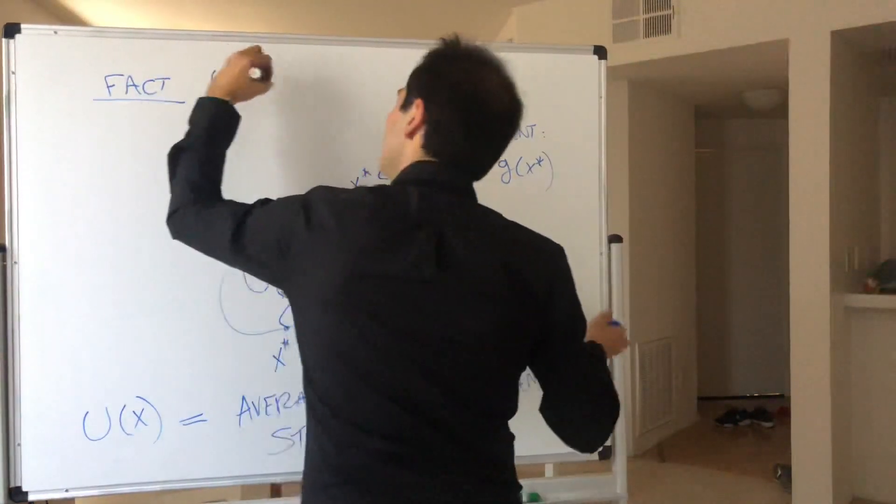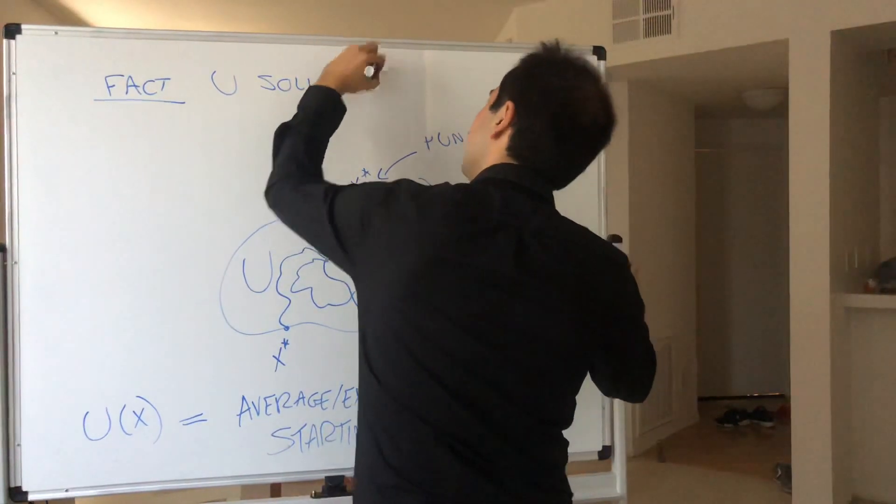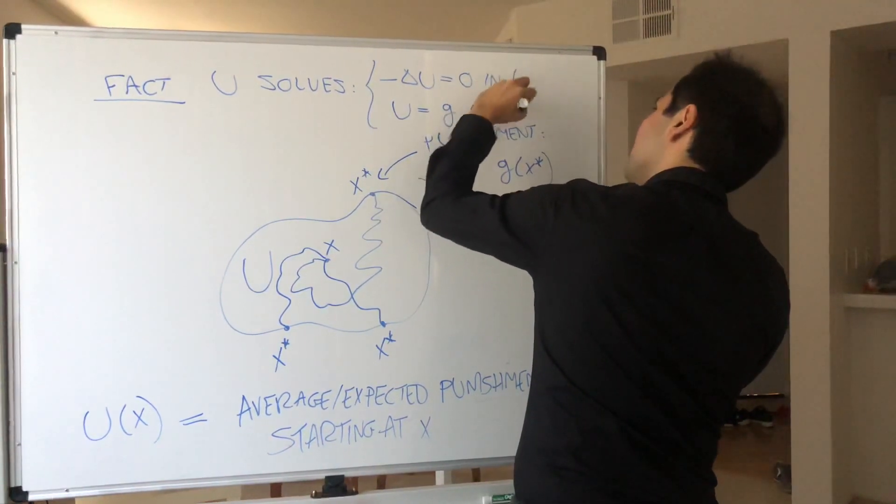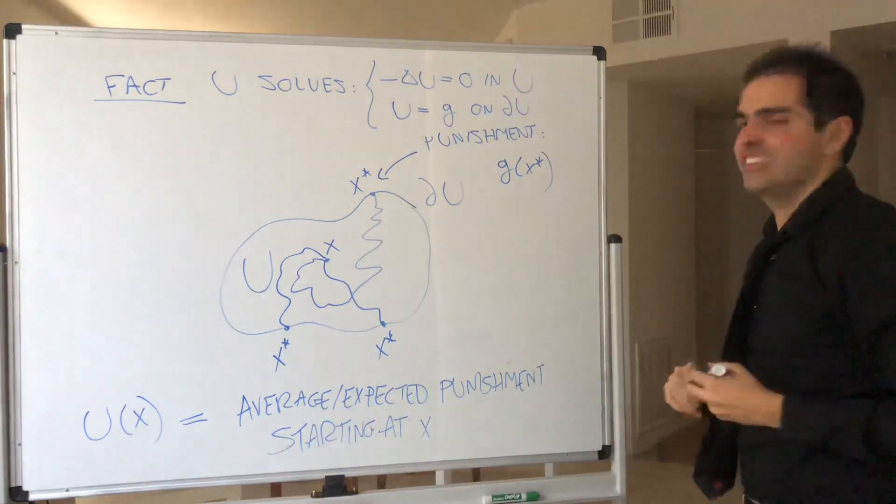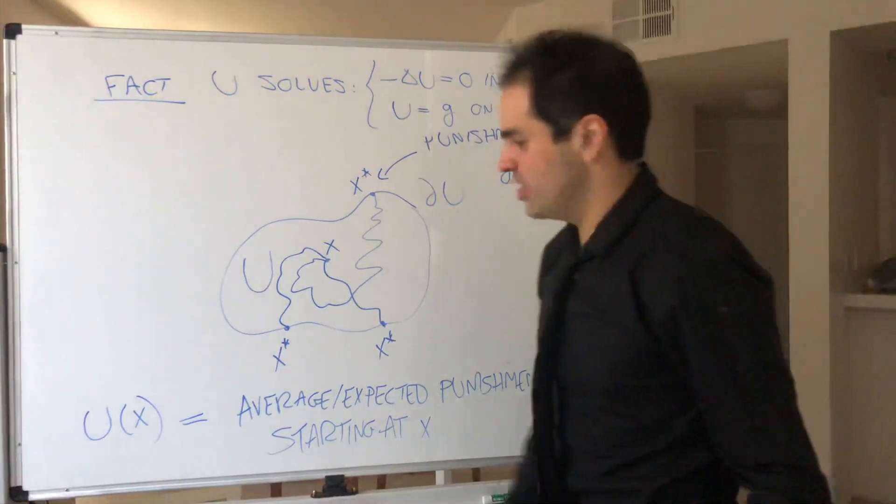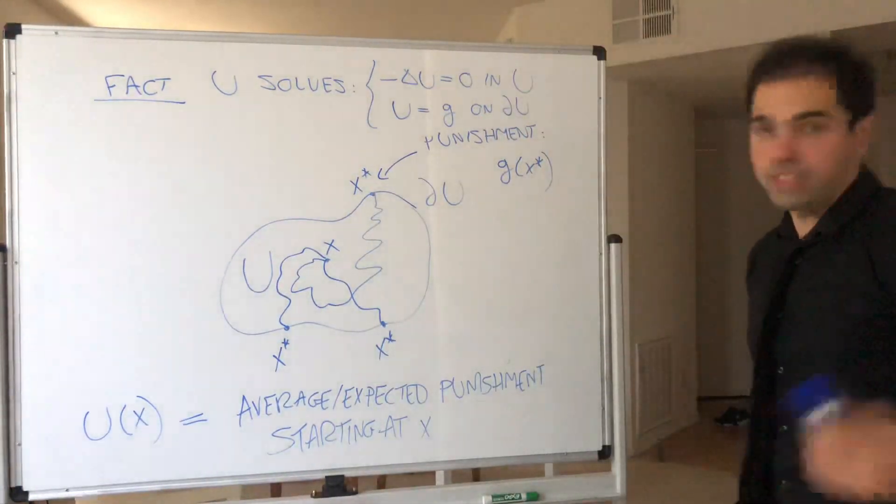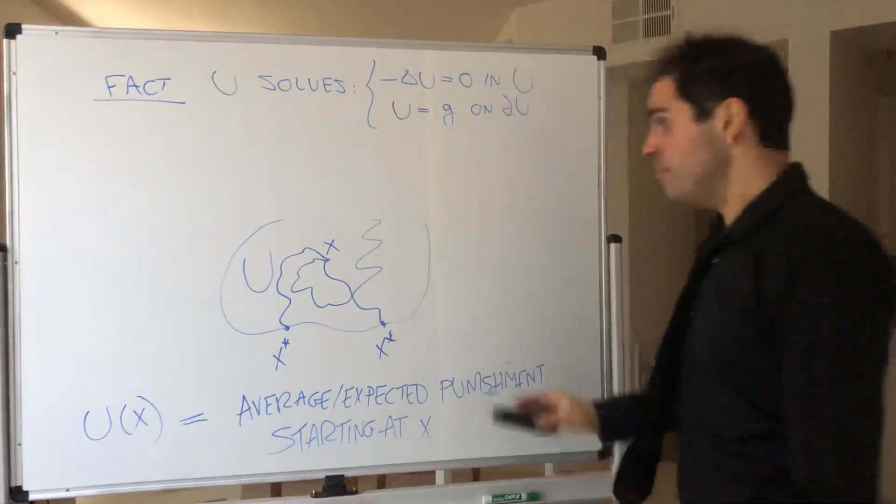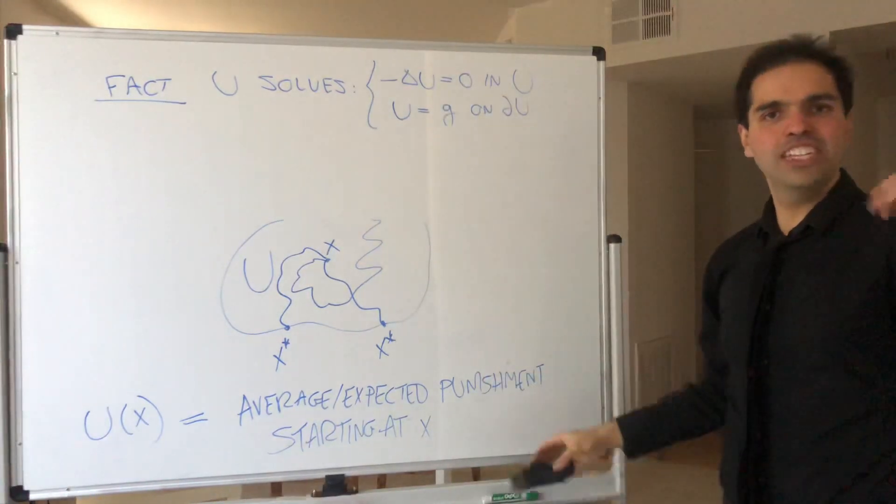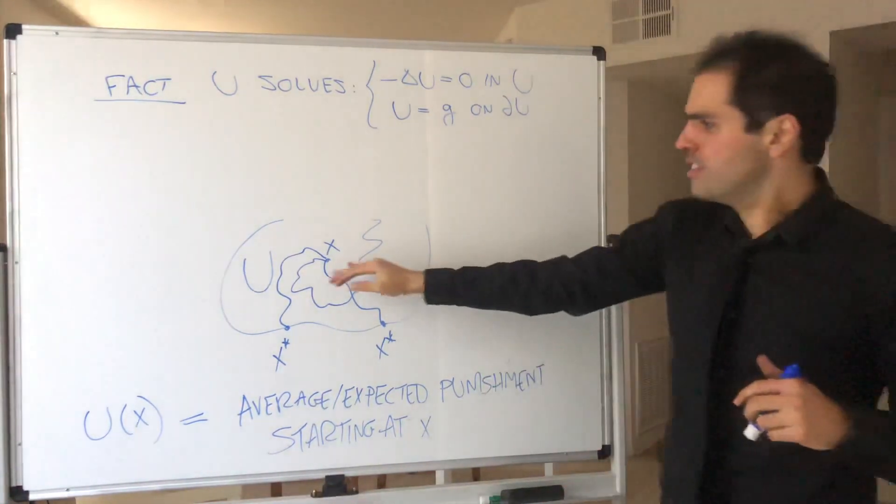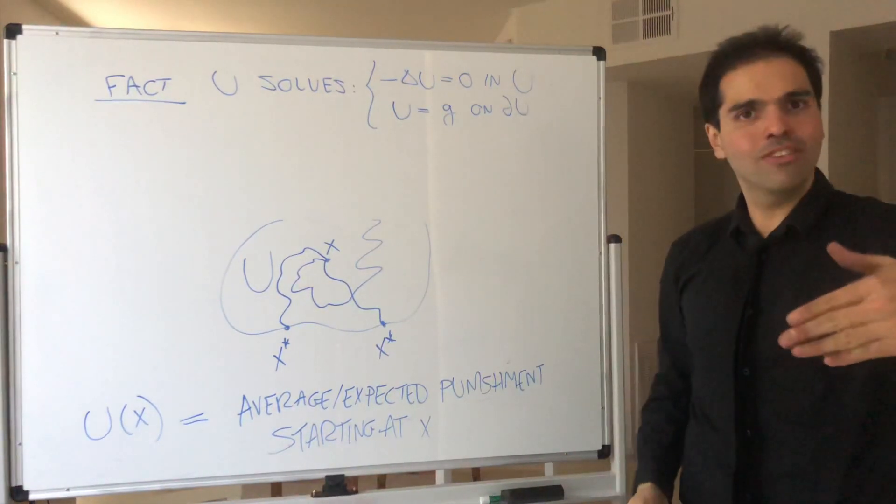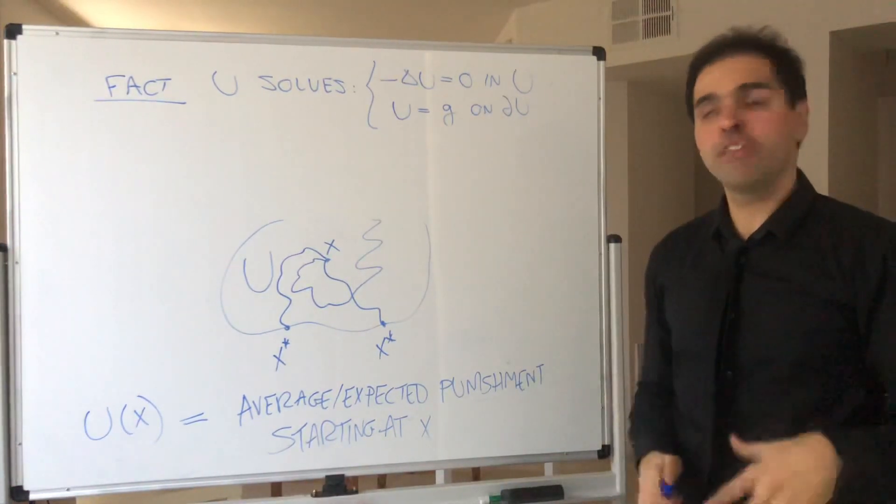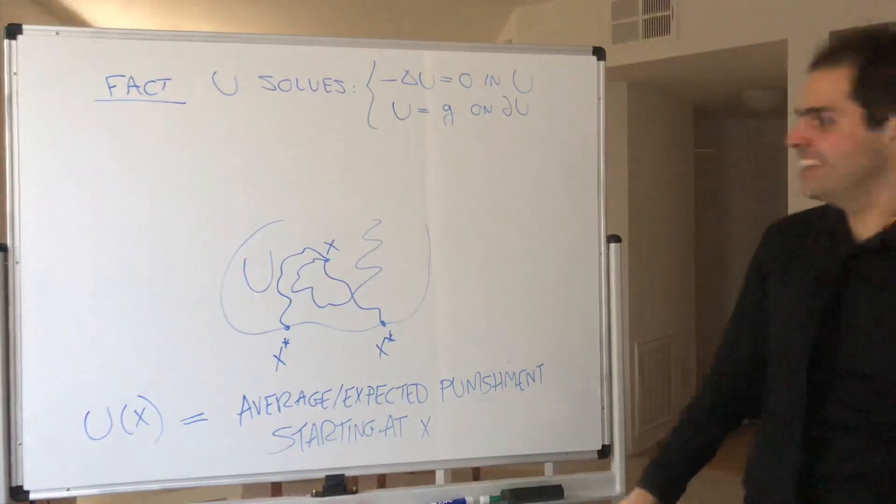But the cool thing is it turns out this u of x, it satisfies Laplace's equation. Which, again, gives you a cool interpretation of Laplace's equation in terms of Brownian motion. So in fact, u solves minus Laplacian of u equals zero in u, and then u equals g on partial u. So it's a nice stochastic interpretation of Laplace's equation. And I believe you prove this by using the mean value formula of Laplace's equation, in some sense. And by the way, there's an equally cool interpretation in terms of the heat equation, where this time you start at a certain x, but after a fixed amount of time, you say stop, and you get a sort of reward or punishment. And then it turns out that scenario solves the heat equation. But that I can do in another video.